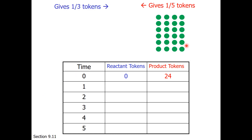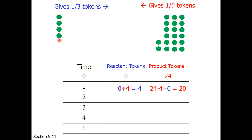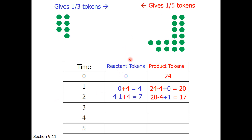Starting with 24 tokens on the product side and none on the reactant side, our forward rate is 0 tokens and our reverse rate is one fifth of 24, which is 4 tokens. After the first exchange, we take one third of 4 (which is 1) forward, and one fifth of 20 (which is 4) in reverse. We are now at 7 reactant and 17 product tokens.